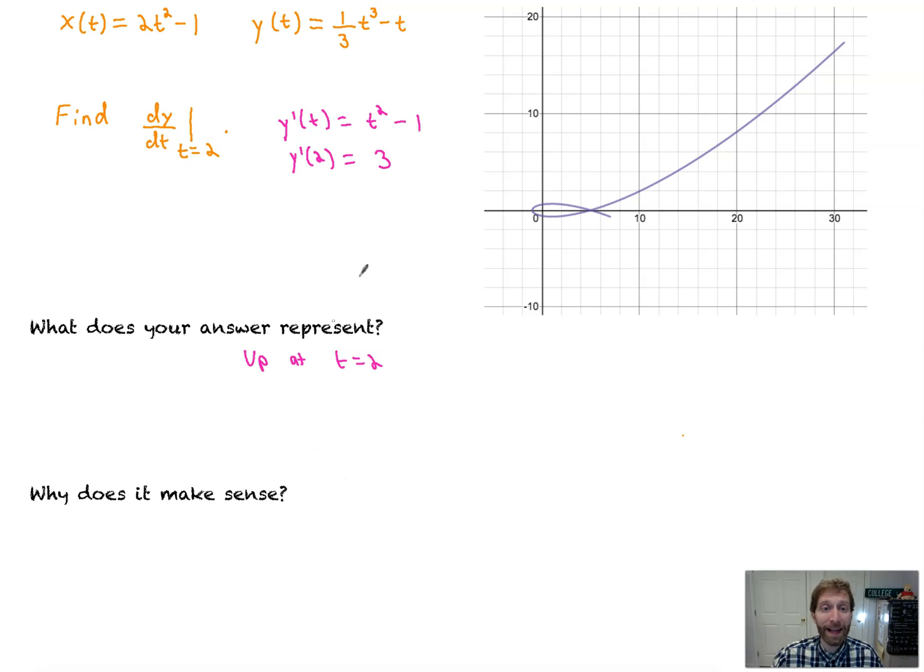So what does my answer represent? It represents the up and down movement. And in this case, we are moving up at a rate. At t equals 2, at a rate of 3. Why does that make sense? Well, again, if the derivative is positive, and the derivative in this case is referring to just the Y motion, then we're moving up. And again, we took a look at the point. We took a look at the motion. Here, we're moving up and to the right.